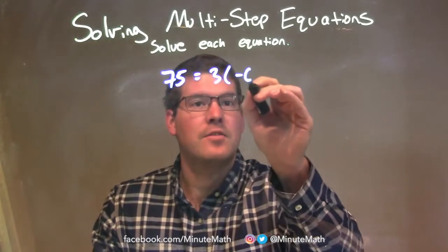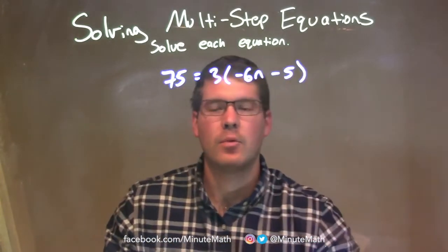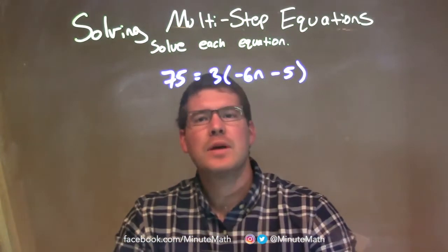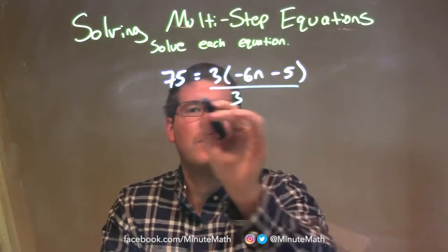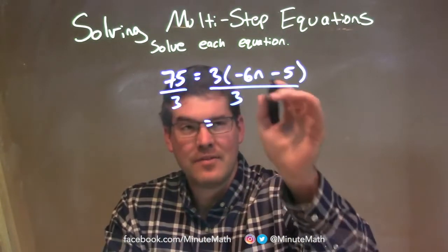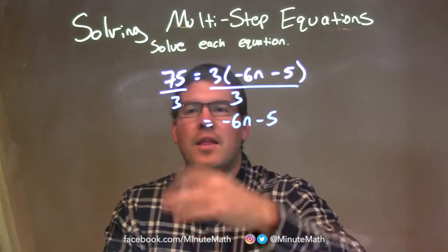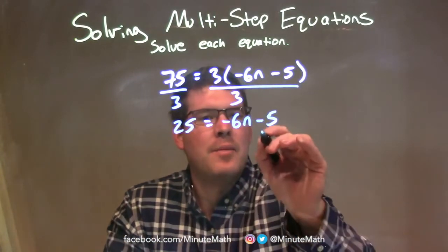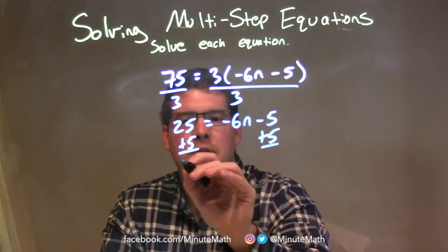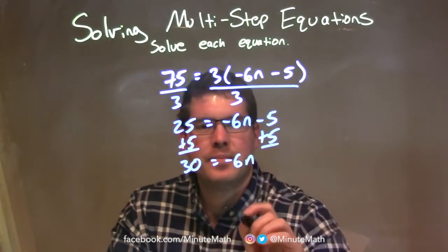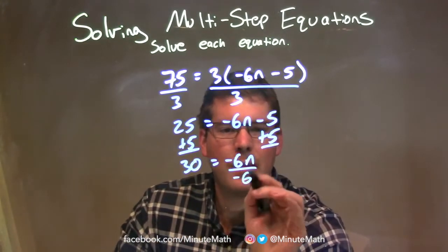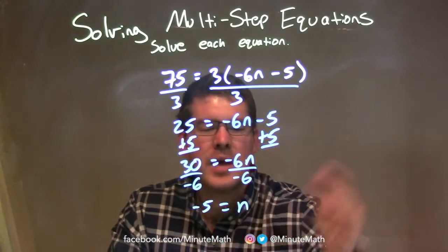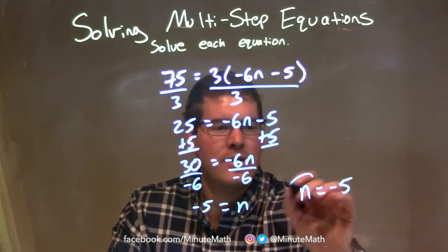75 equals 3 times (negative 6n minus 5). I see multiplication — I can do the opposite, dividing by 3 on both sides. That leaves negative 6n minus 5 on the right, and 75 divided by 3 is 25 on the left. Now I keep whittling things down — I add 5 to both sides: 25 plus 5 is 30, and we bring down negative 6n. I divide by negative 6 on both sides: 30 divided by negative 6 is negative 5. So n equals negative 5.